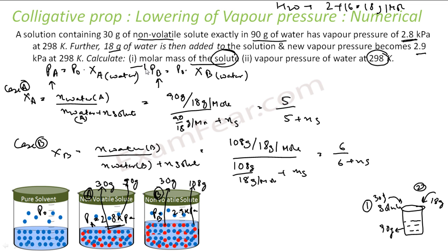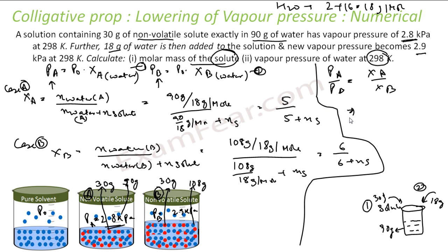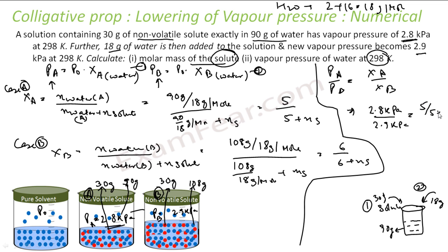Dividing the two equations, P0 cancels: PA/PB = XA/XB. Filling in values: 2.8/2.9 = [5/(5+ns)] / [6/(6+ns)]. Solving for ns gives ns = 30/23 moles of solute.